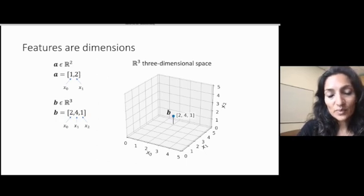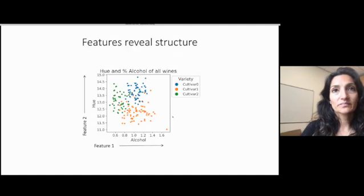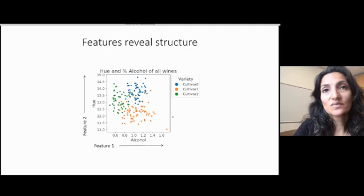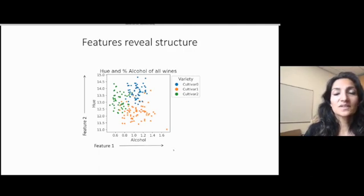Now, thinking of data points as existing in space has a lot of uses, one of which is visualization, as I just showed you. And one of the reasons this is useful is you can start to see how the data is shaped and how the data spreads. So going back to our wines data, if you use feature 1 as the alcohol content, feature 2 as the hue, you can start to see a difference between the different cultivars.